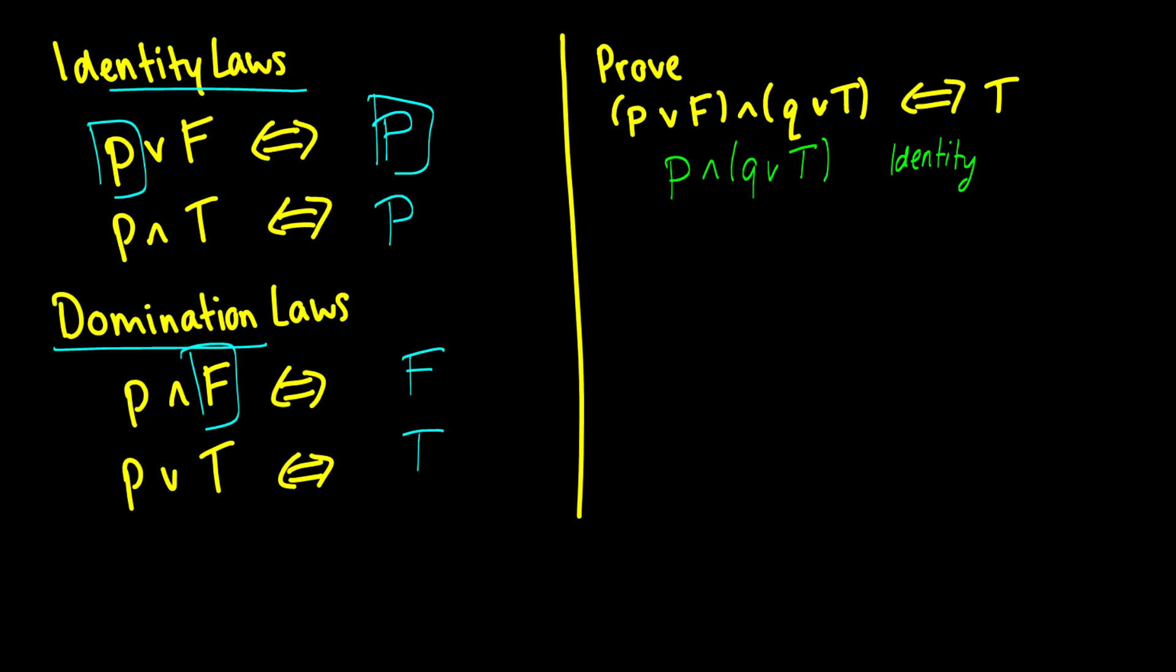So, this was the first step right here, simplifying P or false. In our second step, we're going to do Q or true. So this will be P and, well, Q or true is the same thing as truth, and this is domination. And now we have P and true. So, P and true, we need to do now, and we know this is equal to P, and this is identity.